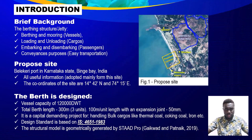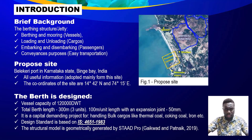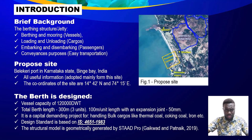Now let's look at the introduction, first at the brief background. A question might be asked: what is a berthing structure? To answer it in simple terms, it is a coastal engineering structure that is made for berthing and the mooring of vessels, for loading and unloading of cargoes, for embarking and disembarking of passengers, and for convenience purposes to ensure transportation of goods and people from one place to another.